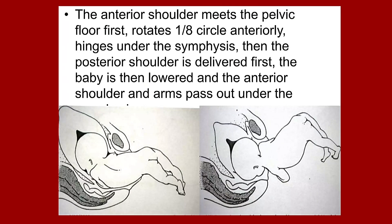The anterior shoulder meets the pelvic floor first, rotates one-eighth of a circle anteriorly, and hinges under the symphysis pubis. Then the posterior shoulder is delivered first. The baby is then lowered and the anterior shoulder and arm pass out under the symphysis pubis.